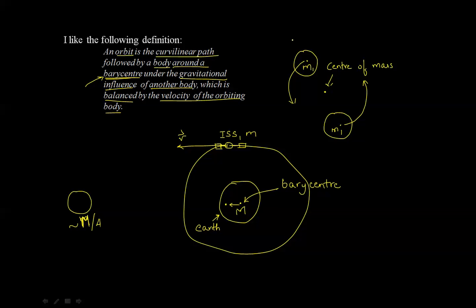We learned that the barycenter is indeed the center of mass of two or more objects orbiting around one another. We saw that when a large body like the Moon orbits the Earth, the barycenter of the Earth-Moon system is further away from the center of the Earth than is the barycenter of the Earth-ISS system.